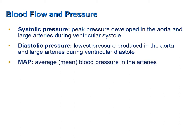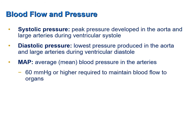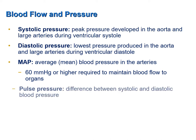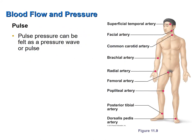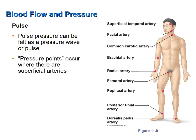Taking the average of systolic and diastolic pressure gives you the mean arterial pressure, or MAP. The clinical significance of this number is that a MAP of 60 mmHg or higher is required to maintain blood flow to organs; if the MAP drops below 60 mmHg, tissues of organs can become ischemic. Pulse pressure is the difference between systolic and diastolic blood pressure. The pulse pressure creates a pressure wave that travels through the arteries, and this is your pulse, which you feel at pressure points where superficial arteries are found. Since pulse pressure is produced with each ventricular systole, we use the pulse to measure heart rate.